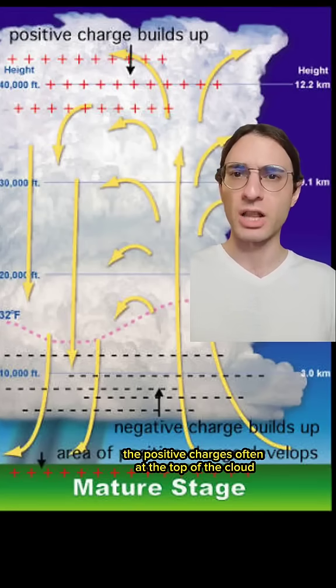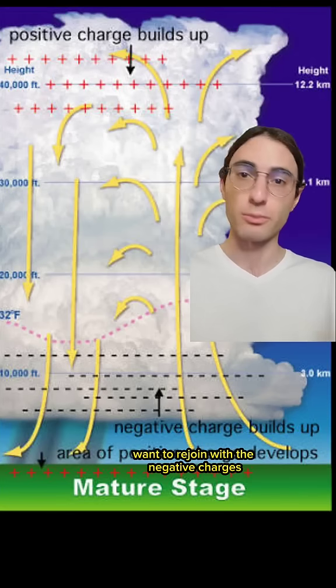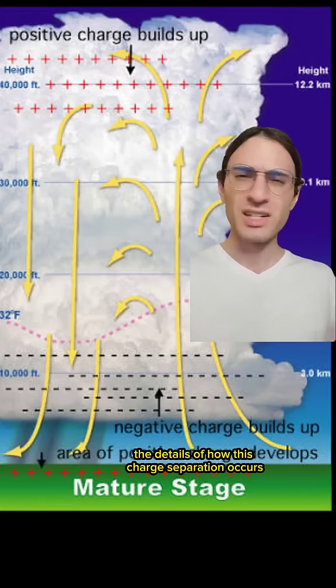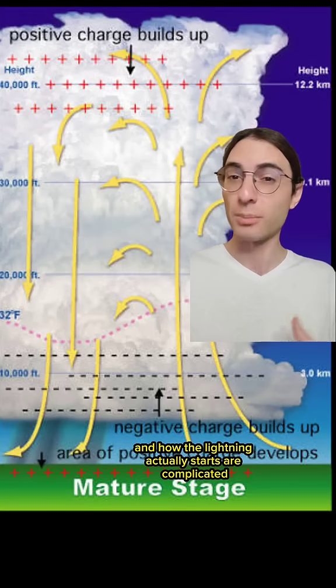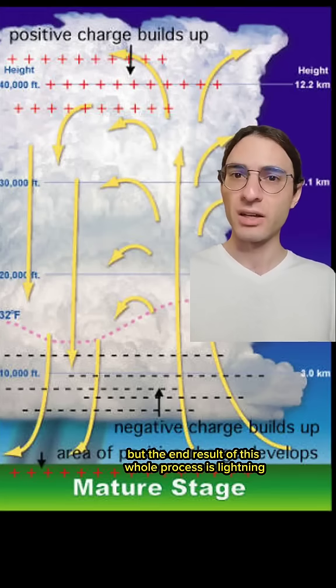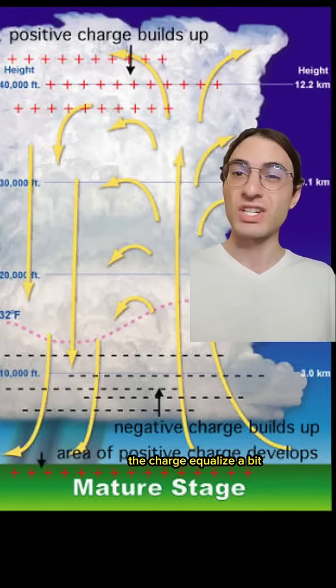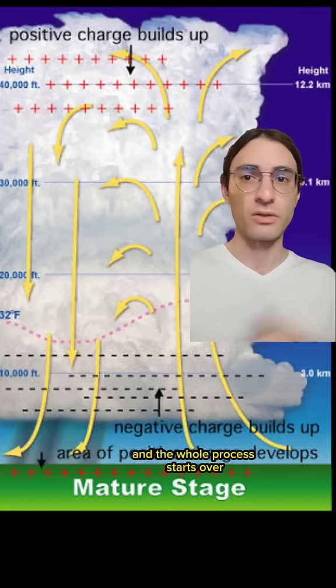The positive charges, often at the top of the cloud, want to rejoin with the negative charges, often at the bottom of the cloud. The details of how this charge separation occurs and how the lightning actually starts are complicated, but the end result is lightning. When the lightning discharges, the charge equalizes a bit, and the whole process starts over.